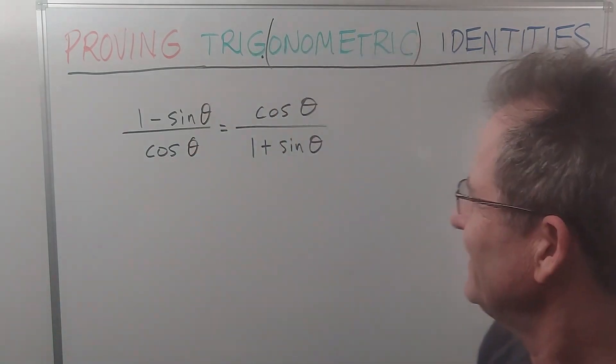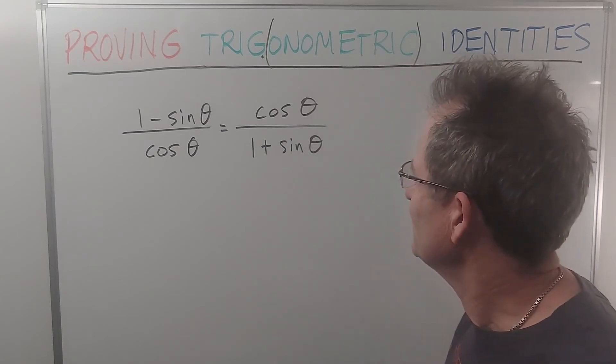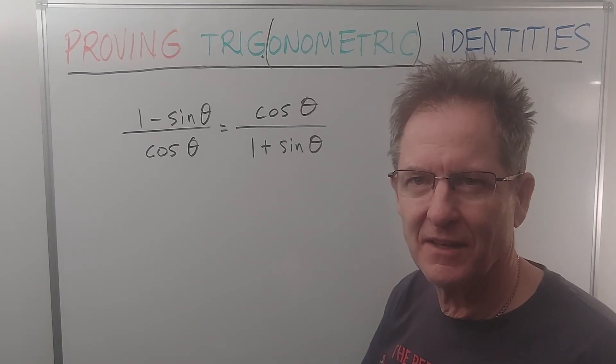Okay, consider this identity: 1 minus sine theta over cos theta equals cos theta over 1 plus sine theta.